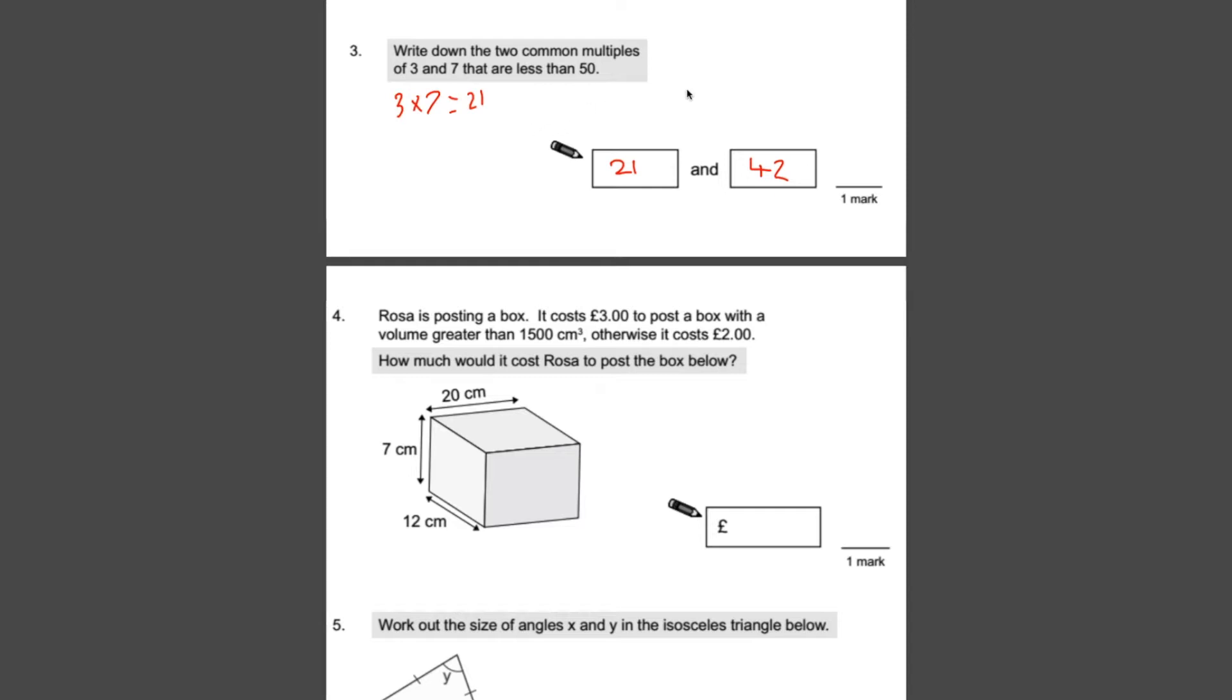If you couldn't do that in your head, like I say, just keep going on the times tables, write out your 3s, write out your 7s, and then you should spot one that's in both. But remember, it has to be less than 50.